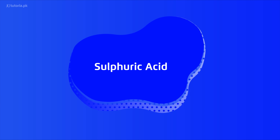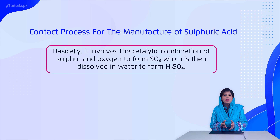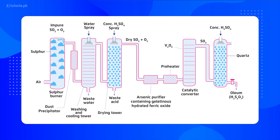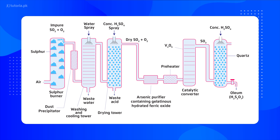The principle of sulfuric acid manufacture is the contact process — the industrial-scale manufacture of sulfuric acid. It involves the catalytic combination of sulfur and oxygen to form sulfur trioxide, which is then dissolved in water to form sulfuric acid. In the full contact process, raw materials pass through a purifying unit.